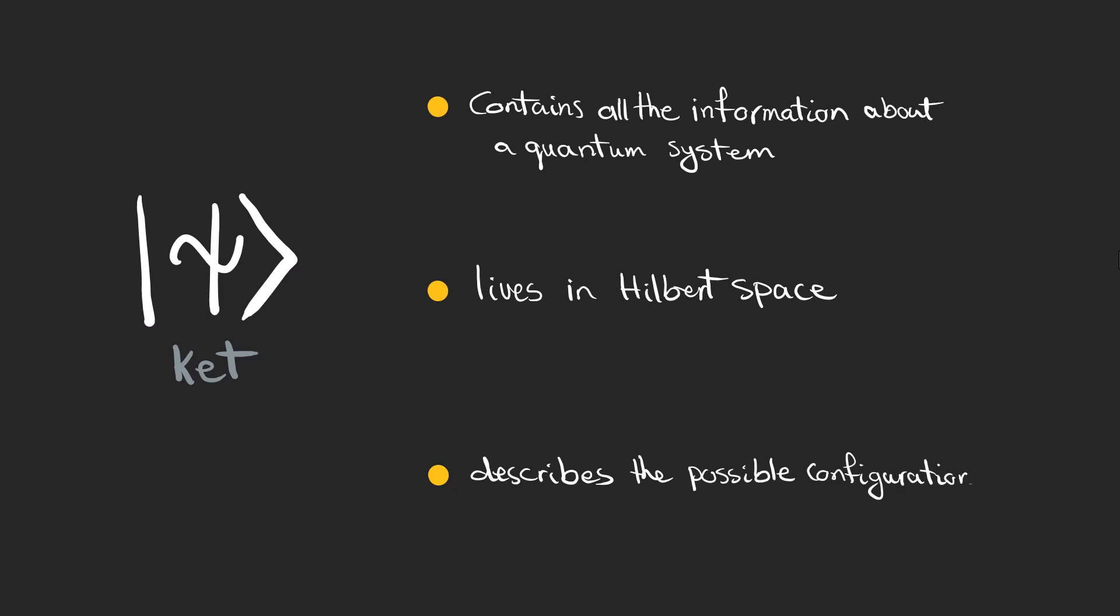These vectors exist in a complex abstract space, known as Hilbert space, and describe the possible configurations a quantum system can be in, such as position, momentum, or spin of a particle.